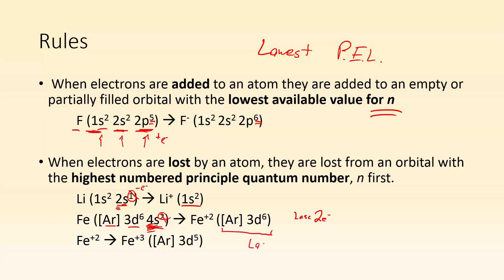So now the configuration is just [Ar] and then 3d6. If I were to lose an additional one from iron, well, the lowest possible one I can lose it from is the third energy level, the d sublevel. That's the highest principal quantum number three that's still available, and I could lose one from it. So now you get 3d5.